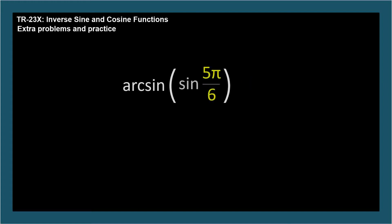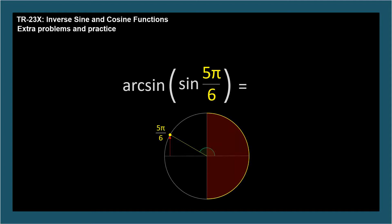What's the angle whose sine is the sine of 5 pi over 6? Well, we want to say 5 pi over 6, but this is outside the range of the arcsine function. By convention, arcsine only returns angles between negative pi over 2 and pi over 2. The circles from the last video are great memory aids to remember the inverse trig function ranges. The sine of 5 pi over 6 is 1 half, and the arcsine of 1 half is pi over 6. So the arcsine of sine 5 pi over 6 equals pi over 6, not 5 pi over 6.